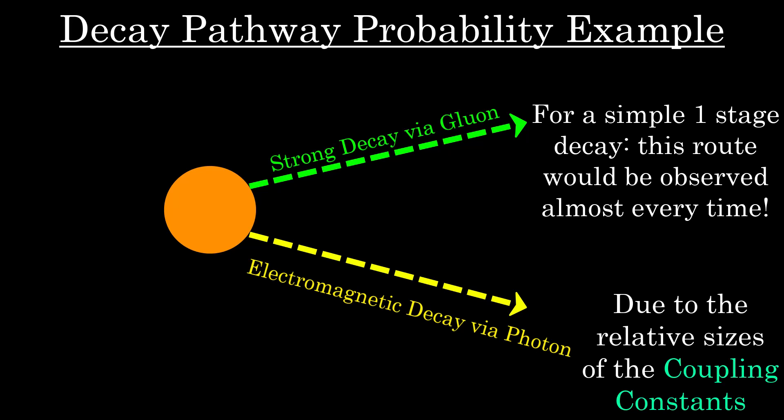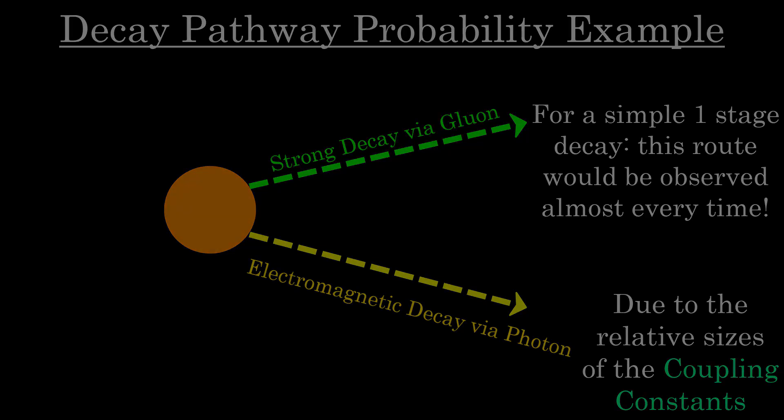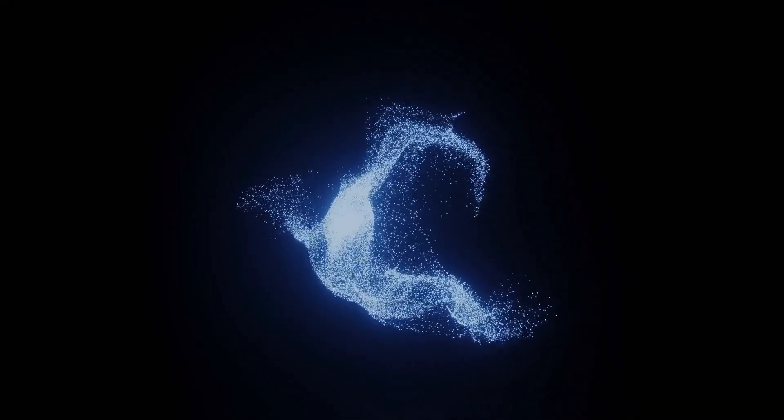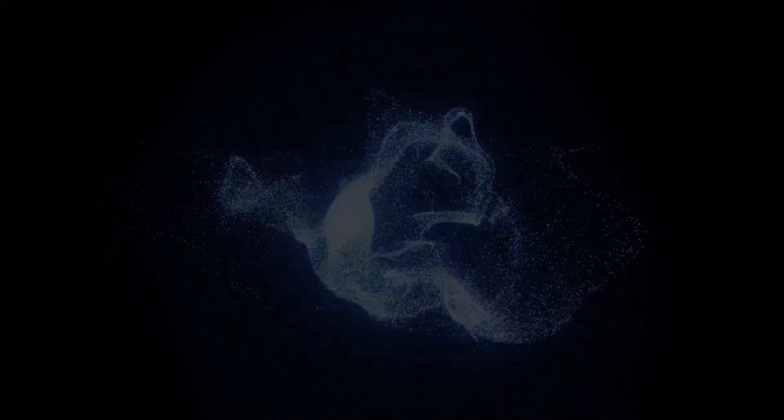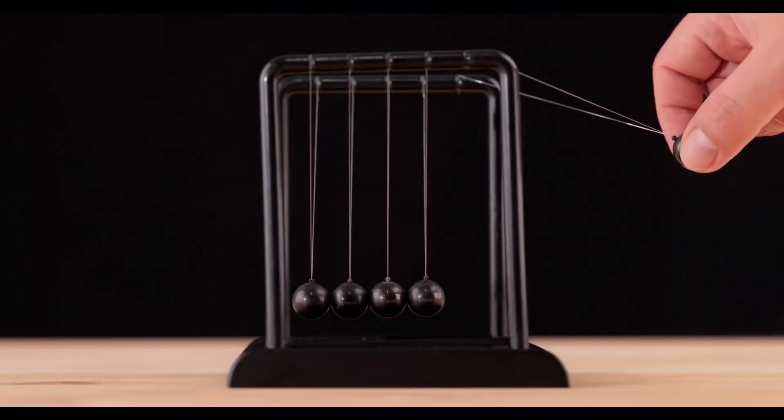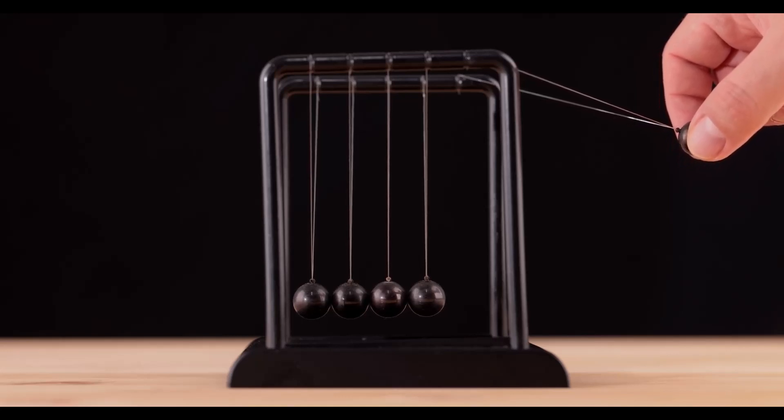Apply this now to gravity, and you see why we don't think we can detect gravitational interactions on a subatomic scale. Notice how I didn't mention that the weak decay was possible in our interaction, and that's because of conservation laws in particle physics.